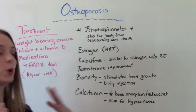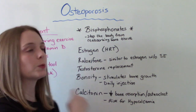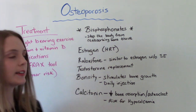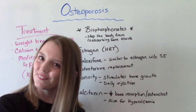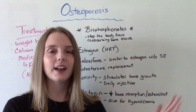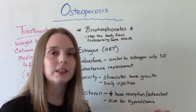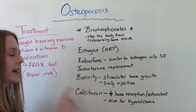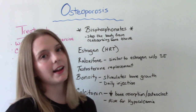Bonseti helps to stimulate bone growth, which is really good if the body is having an issue not building enough bone — though it is a daily injection. And then finally, calcitonin helps to decrease bone reabsorption and decrease osteoclast activity. If you remember from the beginning of the video, the osteoclasts are working way too fast in osteoporosis, so calcitonin helps to slow them down. Important patient teaching: people who are on calcitonin are at higher risk for hypocalcemia, so we need to keep an eye on those laboratory values.